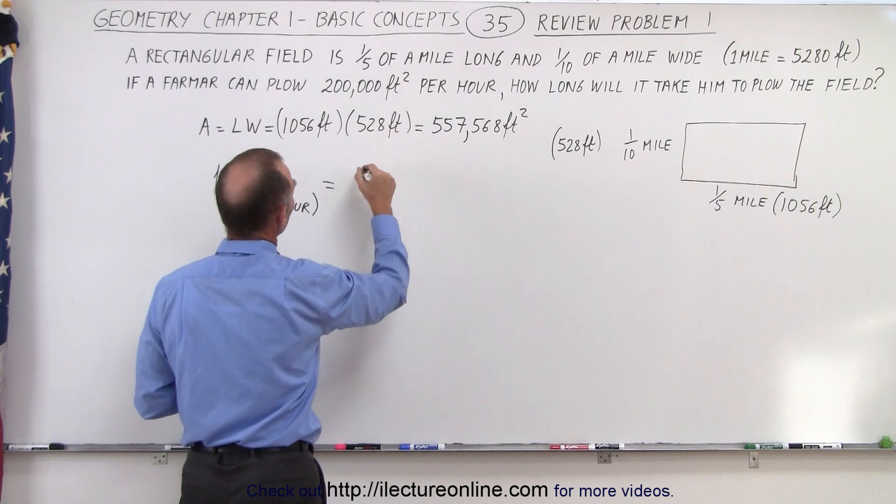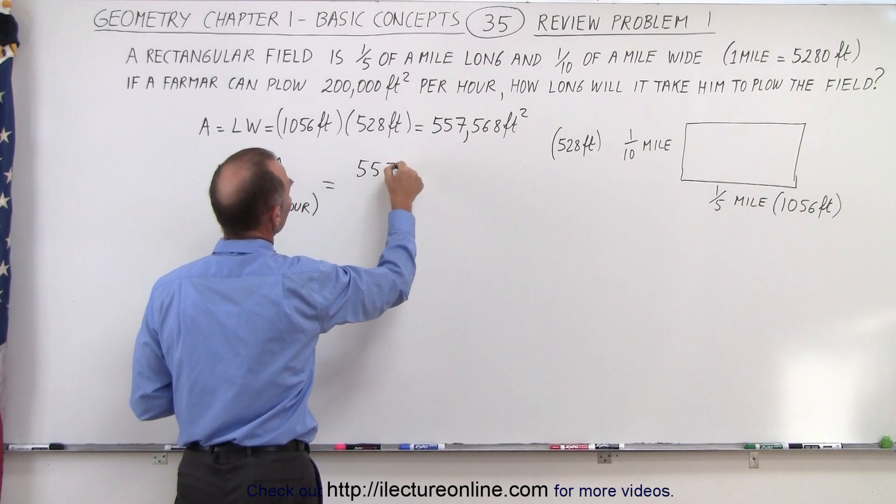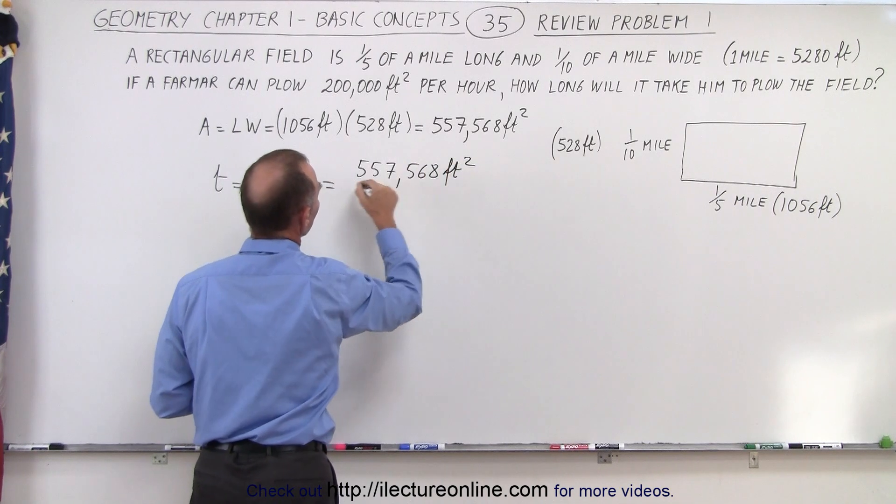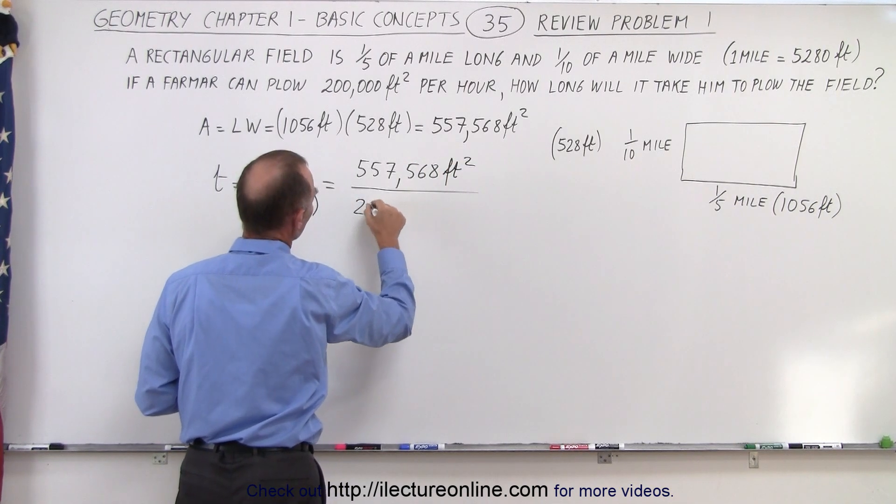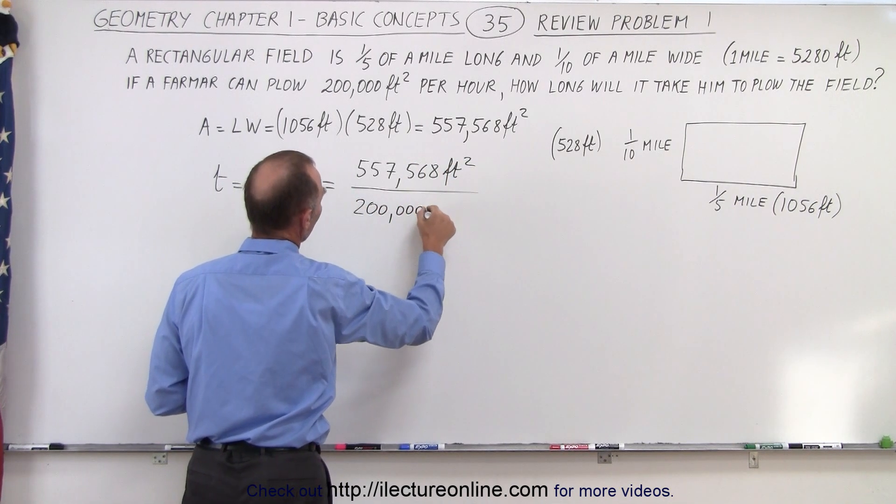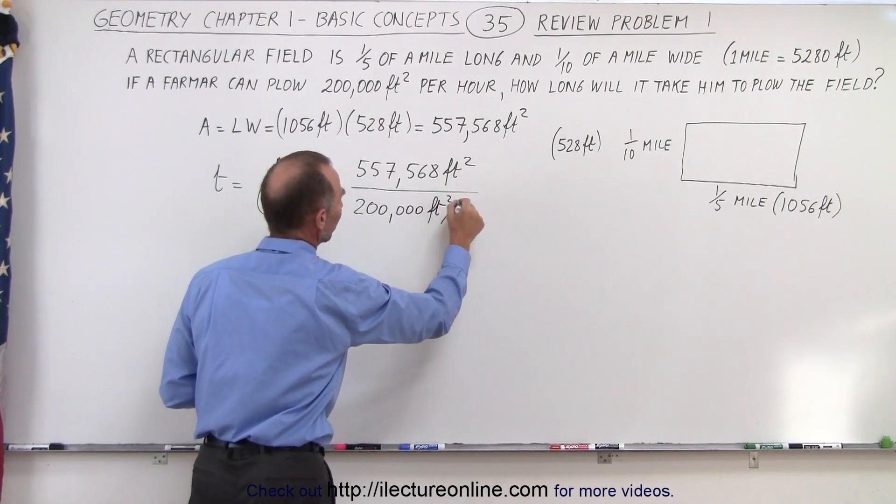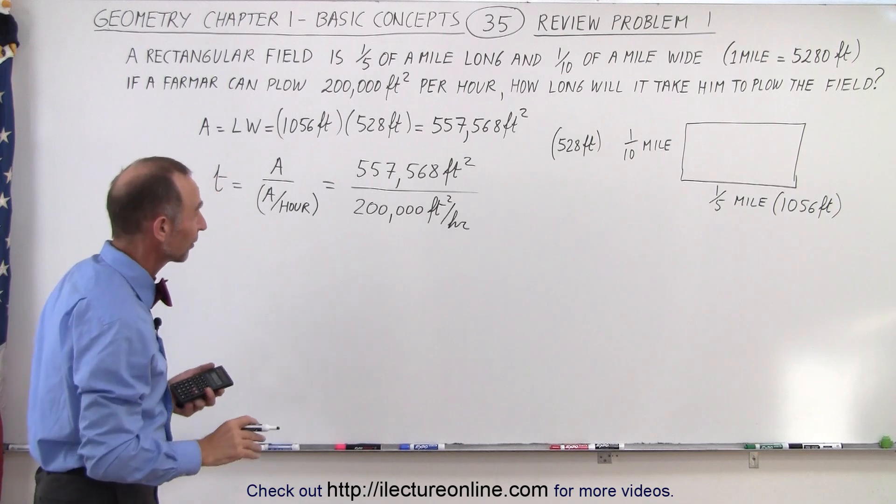So the total area would be 557,568 feet squared. We divide that by 200,000 feet per hour. Or square feet per hour. Otherwise it doesn't work out, does it, with the units.